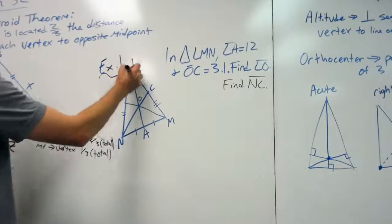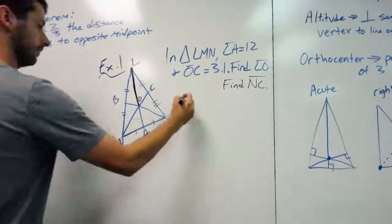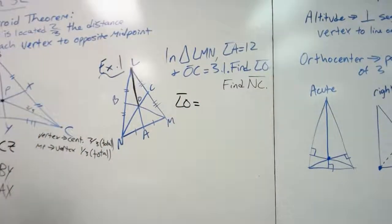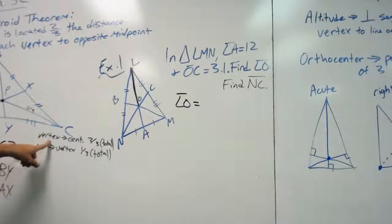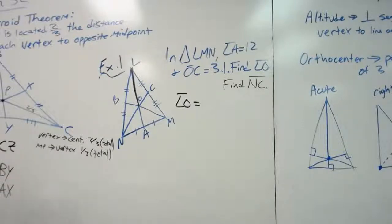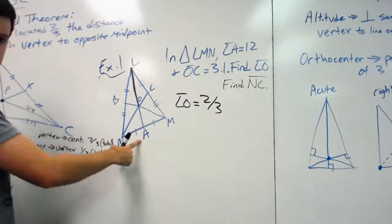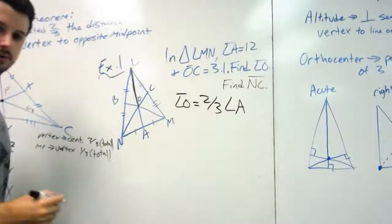So the first thing we need to do is find LO. I'll highlight LO. Well, if you remember from our definitions here, let's look back briefly. From the vertex L to the centroid O, that is two-thirds of the total. Two-thirds of the total, and the total is LA. So that would be our equation that we use.